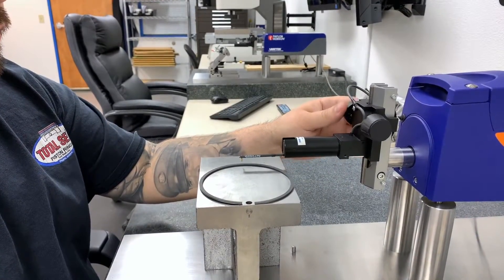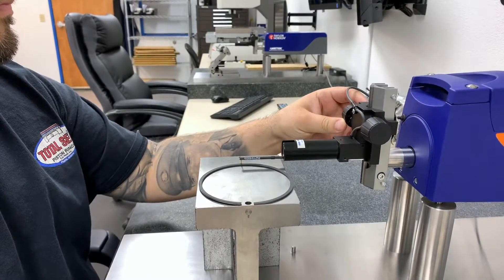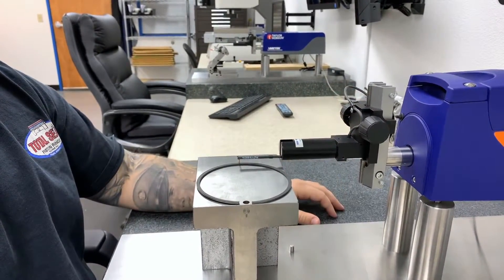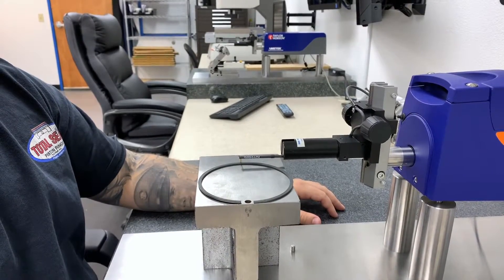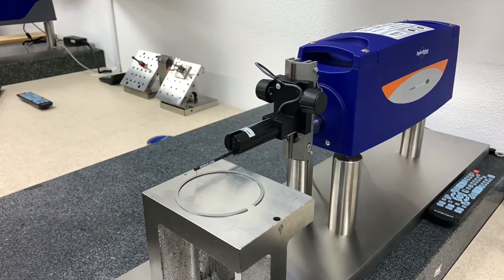The process begins by Roy locating the stylus on the correct area of the ring to be measured. A profilometer can measure surface roughness down to one micron—that's a millionth of a meter.